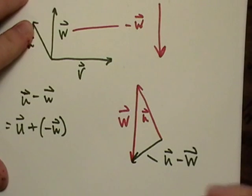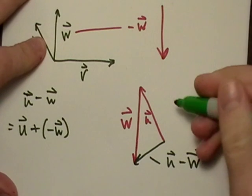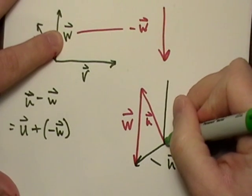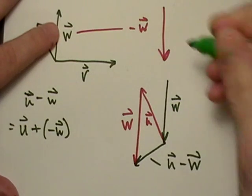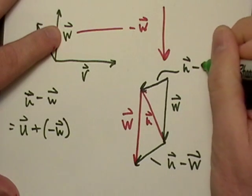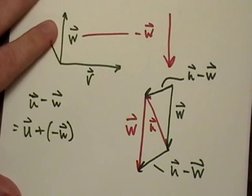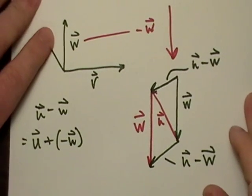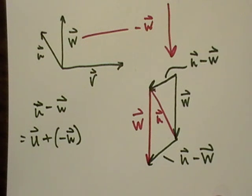So that is some of the geometry involved with vectors. Notice I can even draw w over here if I want — it's the same thing. You can slide vectors around as long as magnitude and direction are preserved. Practice around, look at some of the examples, and draw them out. That's how these are going to work out. See you in the next one.